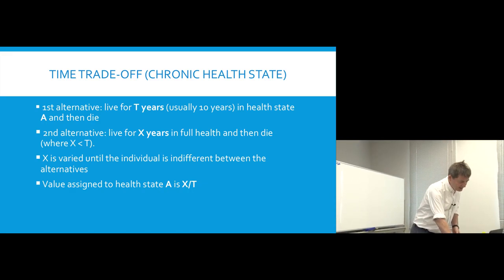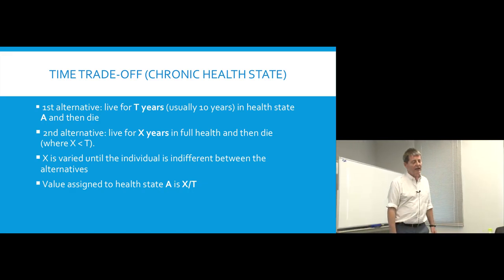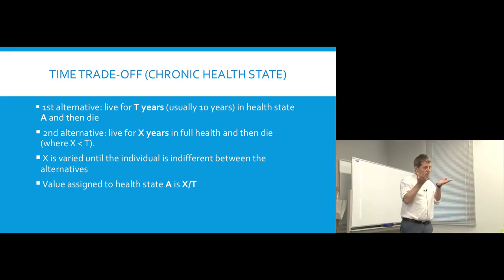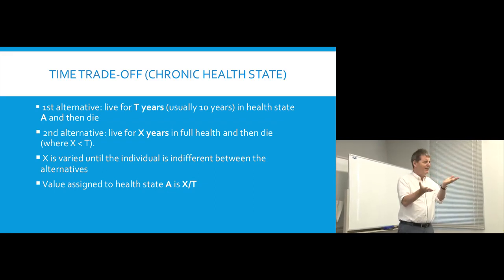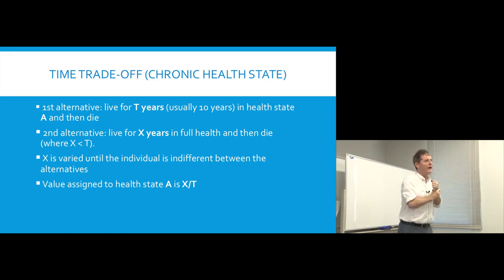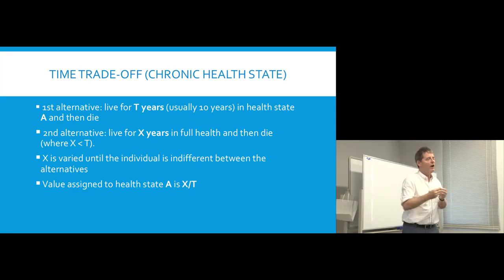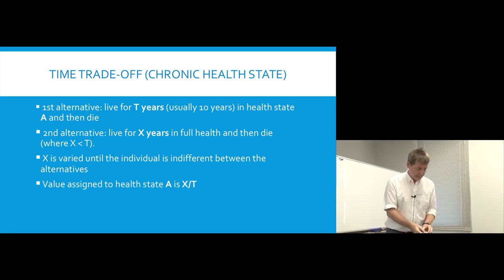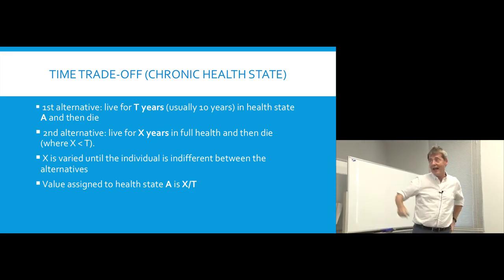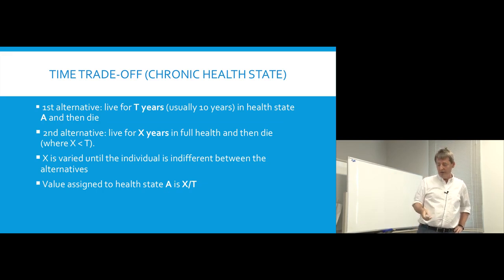There are different ways of asking the question, but essentially you're trying to get to that point where the individual says, 'I really can't choose — they're the same for me.' This shorter period in full health is as attractive or unattractive as this 10-year period in the ill health state. And so the score attached to the ill health state is X over T.